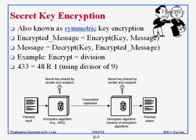For example, we could select the key 9. When I want to send you the number 433, I could send you the number 481. Nobody else can figure out what 481 means, but you know the key 9, so you take the last digit as the remainder and the other digits as the quotient: 48 remainder 1 is 433. The secret is the number 9.